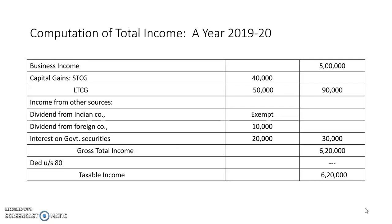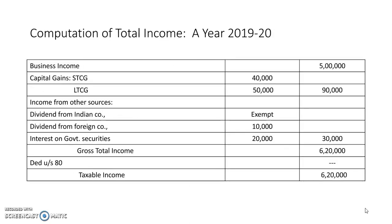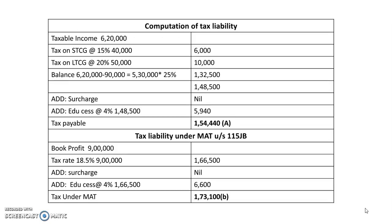For deductions from 80G to 80JJA/JJB, there are no deductions given in this problem, so deductions are nil. The balance of 6 lakh 20,000 is treated as taxable income. Since book profit is directly given, there is no need to calculate it separately.